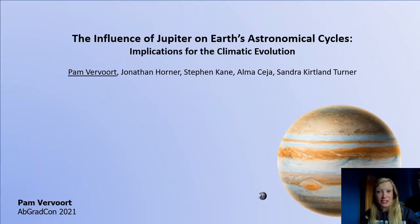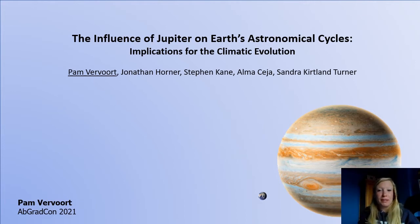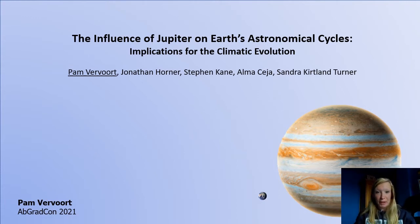Jupiter is the most massive planet in our solar system, and due to its proximity to the terrestrial planets, it exerts a relatively large gravitational force on these inner planets. Jupiter essentially pushes and pulls them out of their ideal circular orbits. In this study, we explore the influence of Jupiter on the orbital dynamics of the Earth and the implications for our planet's spin dynamics and climate variability.